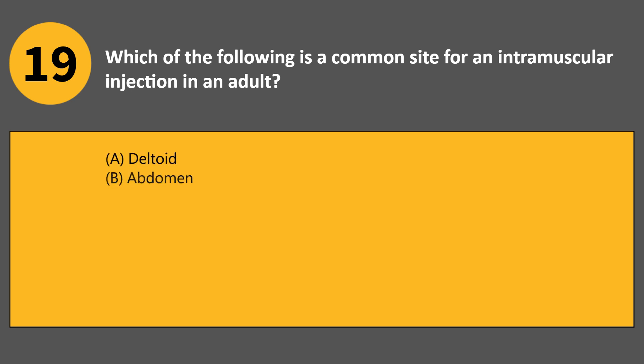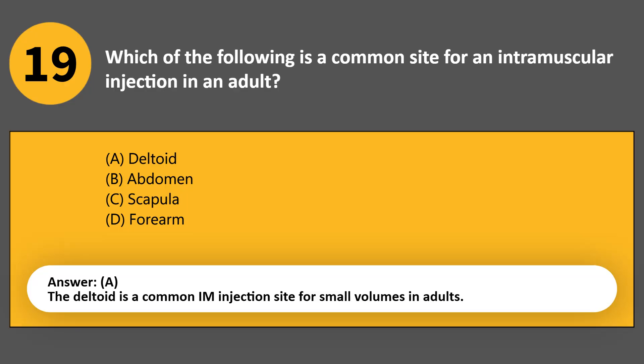Which of the following is a common site for an intramuscular injection in an adult? A. Deltoid. B. Abdomen. C. Scapula. D. Forearm. Answer A. The deltoid is a common IM injection site for small volumes in adults.